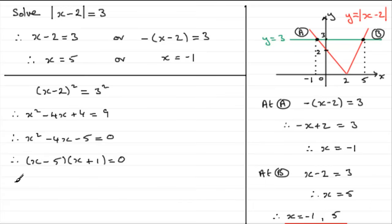Remember now, each factor can equal 0. So you can either have x minus 5 equals 0 or x plus 1 equals 0. And this leads to the results that we wanted. x equals 5 or x equals minus 1.